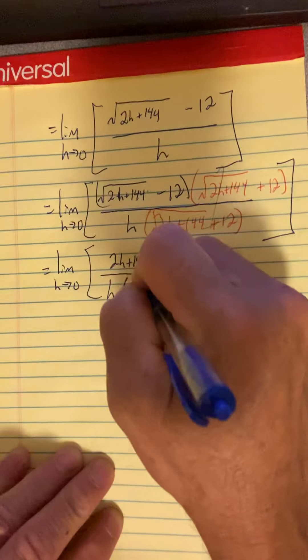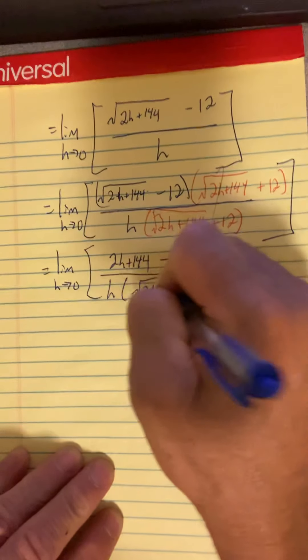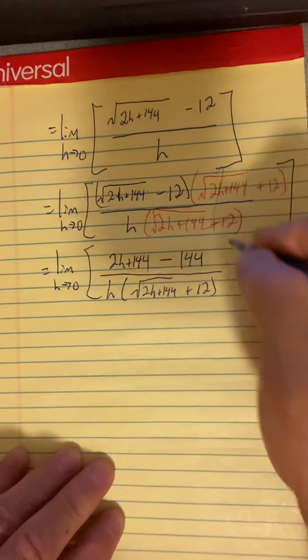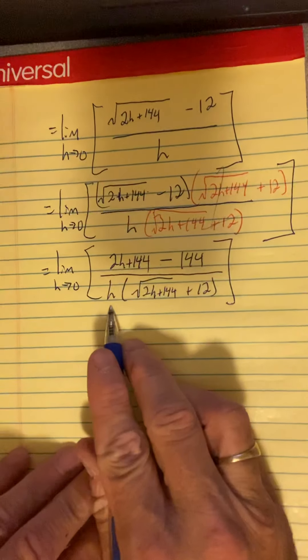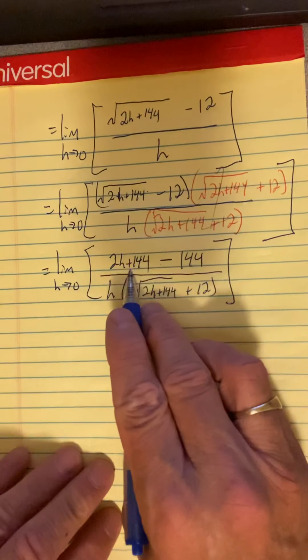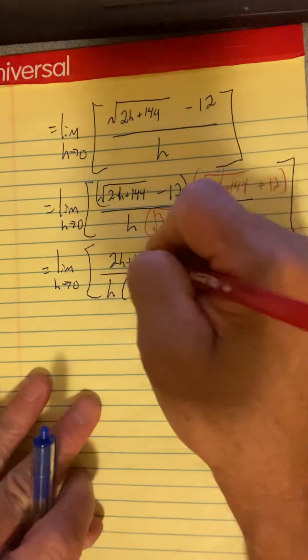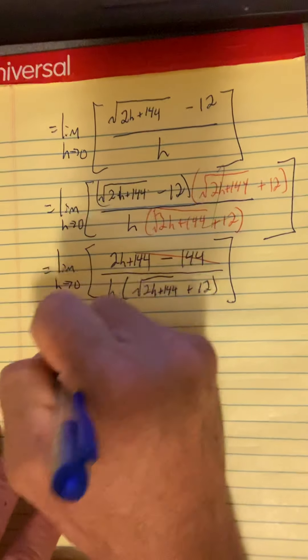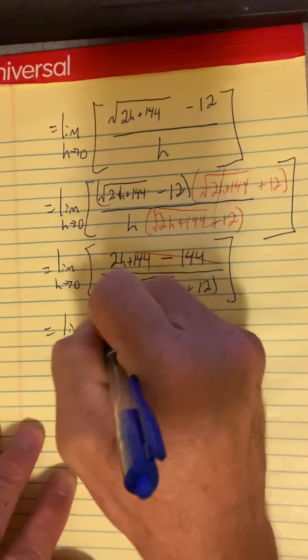And I have h times the square root stuff down here, this conjugate. And I'm not going to distribute the h. That'll just entangle it. I'm really hoping to make the h go away. Now, I can't cancel yet because of this plus. But once you realize those go to zero, then you're left with factors that can cancel.